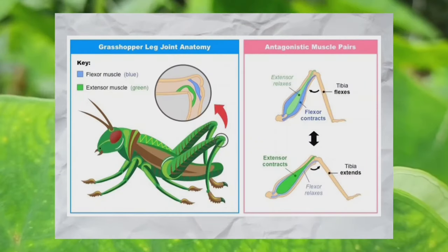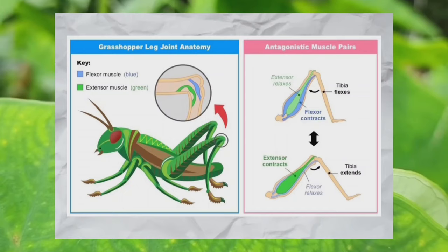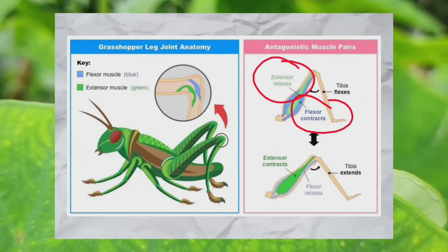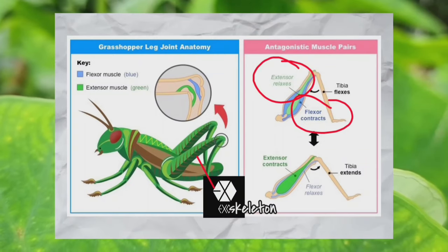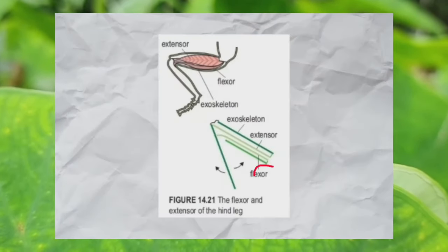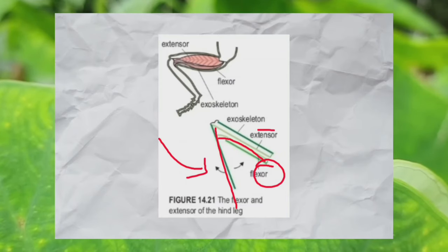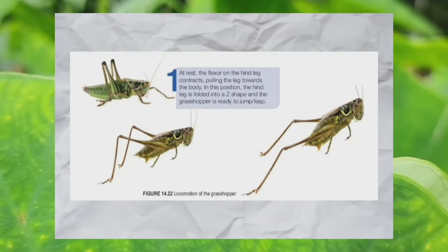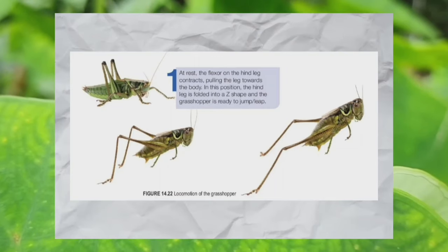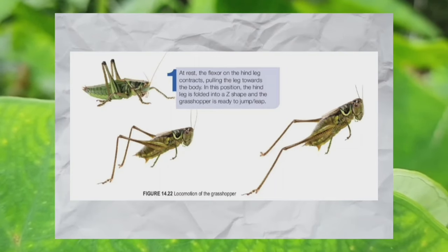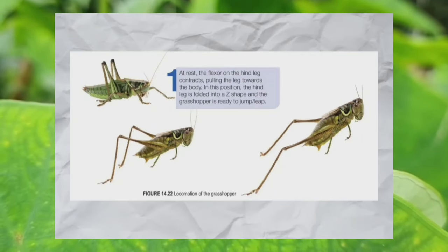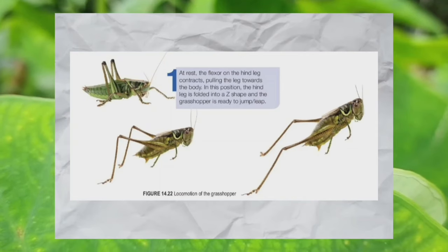In grasshopper locomotion, the antagonistic muscles — the flexor and extensor — are attached to the inner surface of the exoskeleton. The flexor bends a joint while the extensor straightens it. At rest, the flexor on the hind leg contracts, pulling the leg towards the body into a Z shape, making the grasshopper ready to jump.